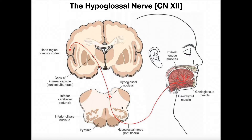For any of these motor cranial nerves, which have upper motor neurons and lower motor neurons, the cranial nerve itself refers to the lower motor neuron. It doesn't mean it can function independently of the upper motor neuron — it's just that when we talk about the nucleus of that cranial nerve and the cranial nerve itself, we're talking about the lower motor neurons. These fibers labeled here are the hypoglossal nerve.